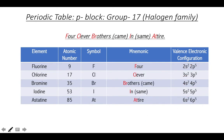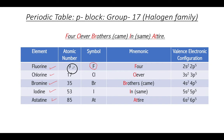Group 17 is the halogen family. This family has five elements: fluorine, chlorine, bromine, iodine, and astatine, with atomic numbers 9, 17, 35, 53, and 85. Their symbolic representations: fluorine is F, chlorine is Cl, bromine is Br, iodine is I, and astatine is At.